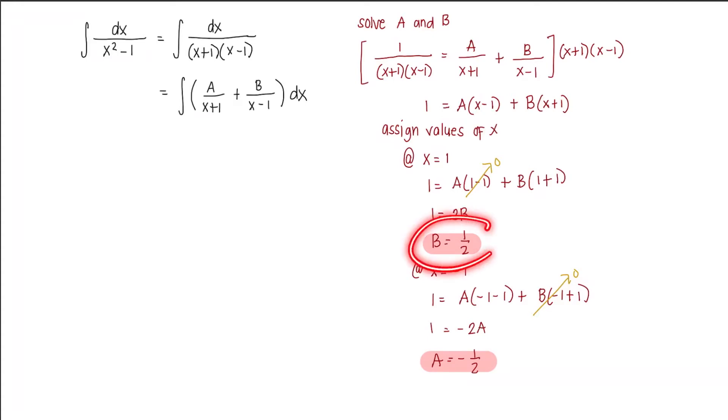Now we can substitute these to our fraction. So substituting, we have the integral of negative 1 half over x plus 1 plus 1 half over x minus 1 dx. So our answer is negative 1 half Ln of x plus 1 plus 1 half Ln of x minus 1 plus c.